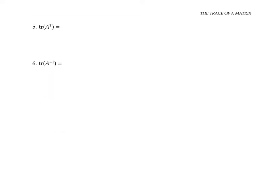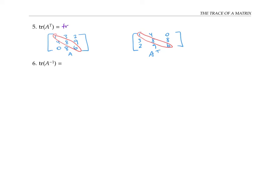There are just a couple more properties to look at. If we have a matrix A and take its transpose, the transpose doesn't change the entries on the diagonal, and therefore it doesn't change the trace. The trace of A transpose is the same as the trace of A.